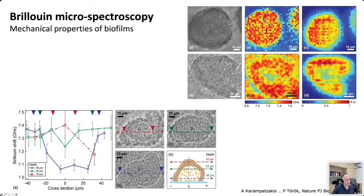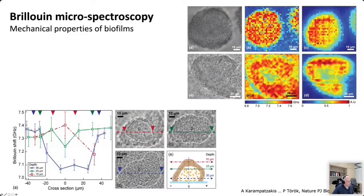These images alone don't let us conclude much biology — I'm just showing them as application examples. This image here is at a particular time instant where we are looking at the biofilm at different depths: image B is at one depth, image C at another depth, and image D at yet another depth. We see the Brillouin shift as a function of position in the cross section. For example, at 36 micrometers depth the elasticity of the biofilm drops significantly, but it is also very stiff in the surrounding region.